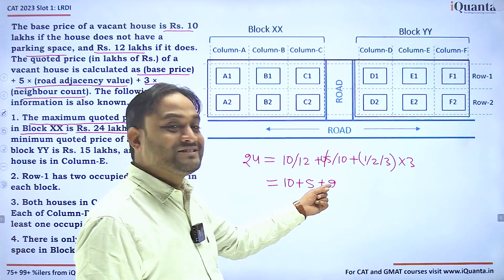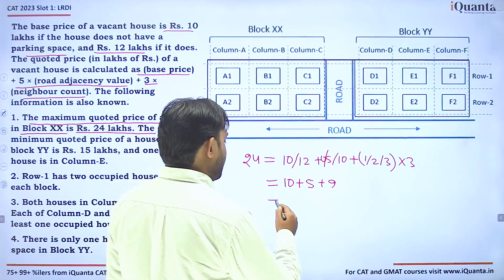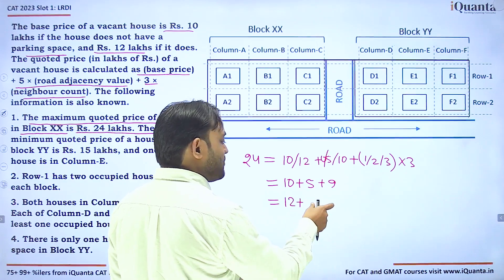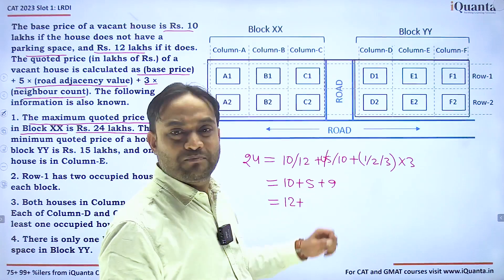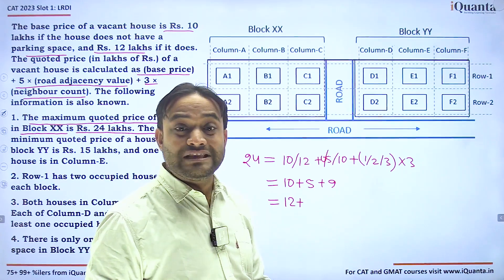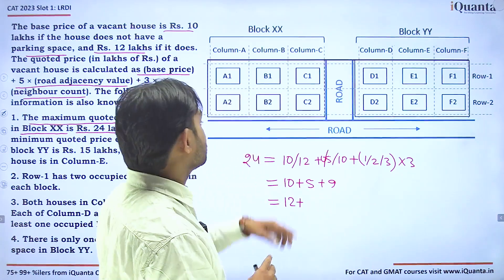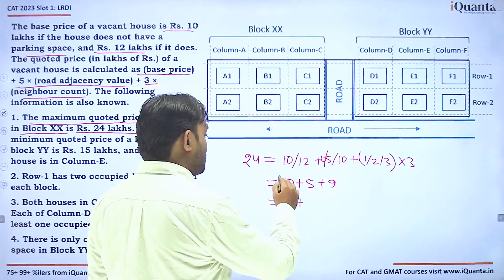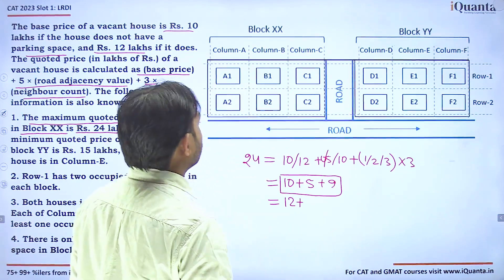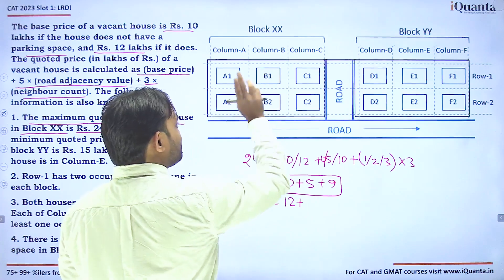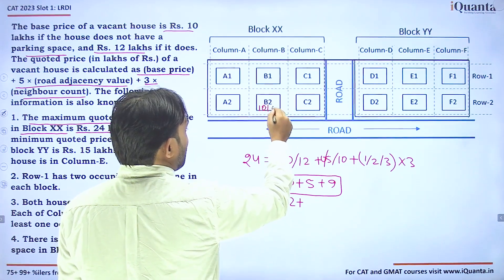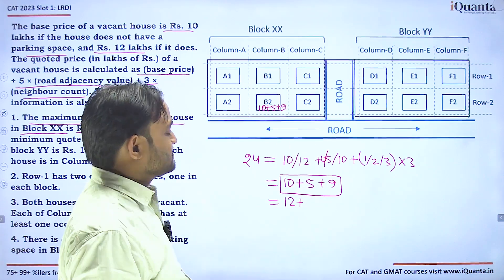We can get 24 as: 10 + 5 + 9 (1 road adjacent, 3 neighbors) — the only feasible case. A house with 3 neighbors in Block XX can be either B1 or B2, but B1 has no adjacent road, so road adjacency for B1 is 0 giving 10+0+9=19, not 24. Therefore it must be B2, which has road adjacency 1, giving 10+5+9=24.